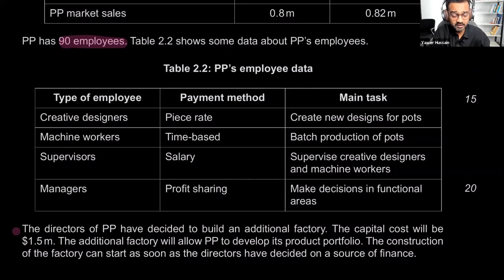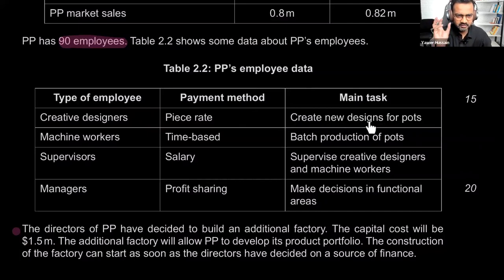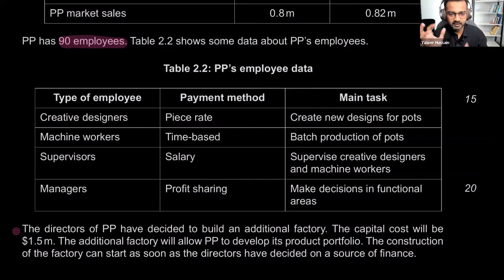The salary method should match the main tasks of the employees. Creative designers are paid piece rate, and their task is to create new designs for pots. Piece rate pays according to number of units produced. The problem is that quantity takes the lead and quality takes a backseat — and quality here means the uniqueness of designs needed from a creative designer. That's the evaluation we have to run on all four employee types.